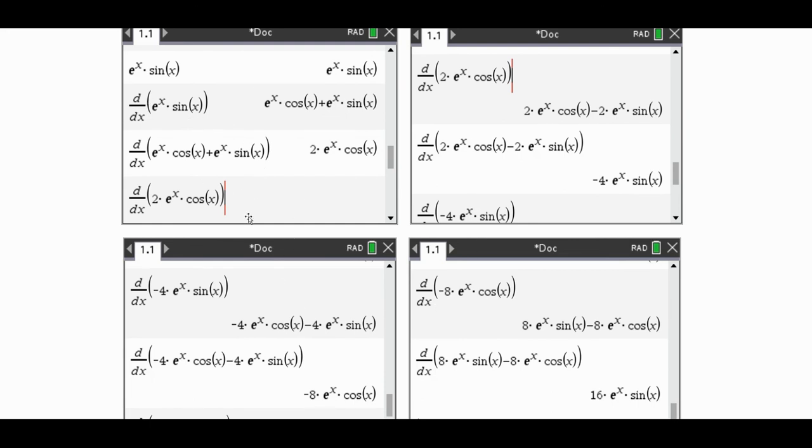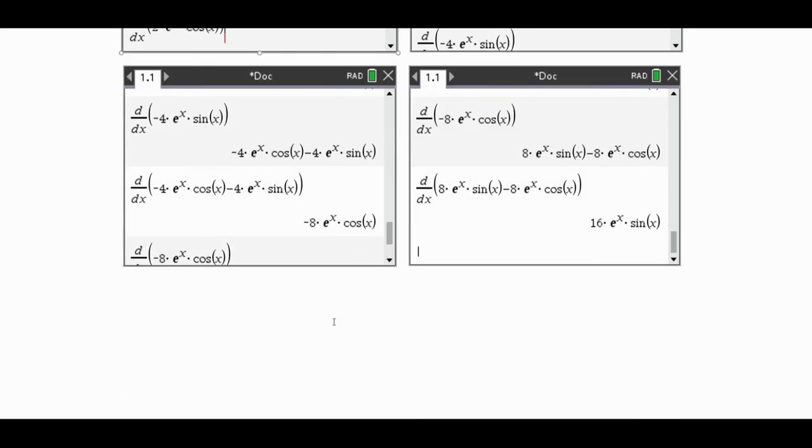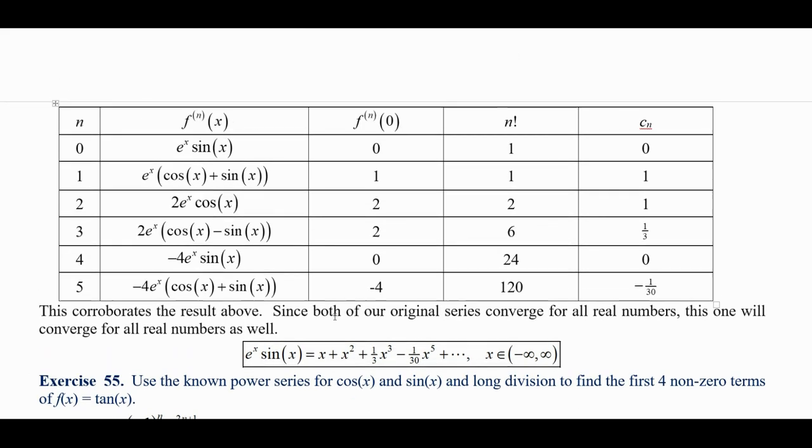But how much work would it have taken to work out the original function, then the first, second, third, fourth, and fifth derivatives we needed that much worked out. So anyway, that's the fifth degree Taylor polynomial for that, centered at zero.